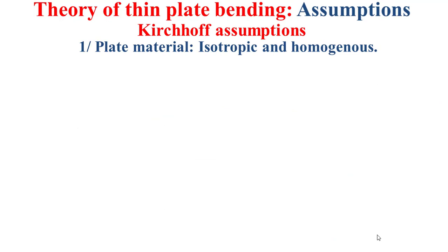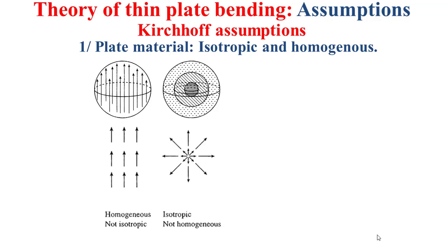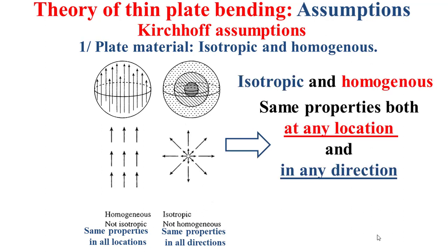The first assumption states that the plate material should be isotropic and homogeneous. The model in this slide presents on the left a homogeneous material but not isotropic, and on the right an isotropic material but not homogeneous. For the homogeneous material, the properties should be the same in all locations and all points of the material. For the isotropic material, the properties should be the same in all directions. So when we say the material should be both isotropic and homogeneous, this means the properties should be the same at any location and in any direction.